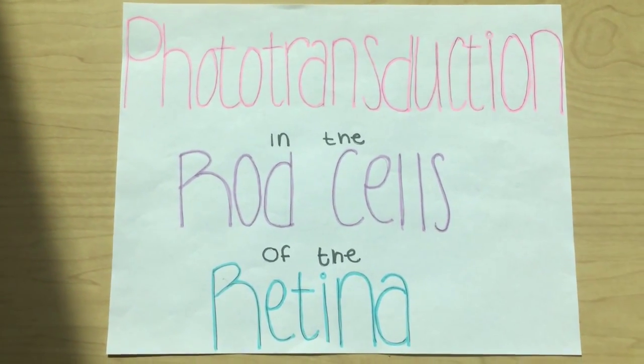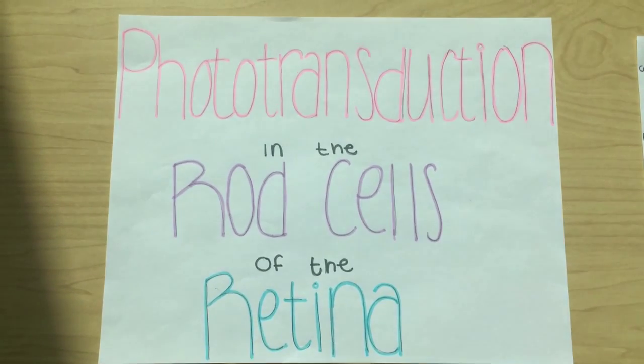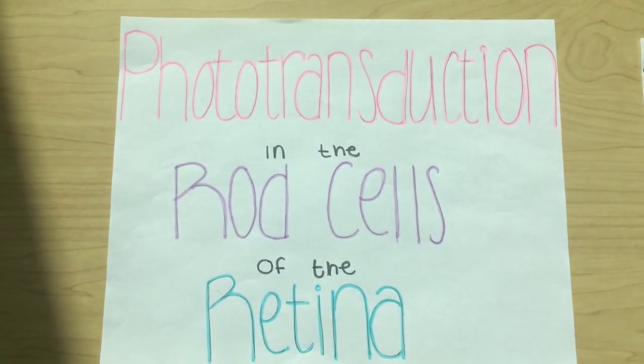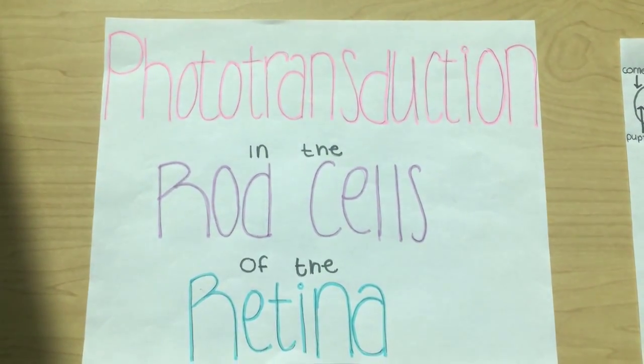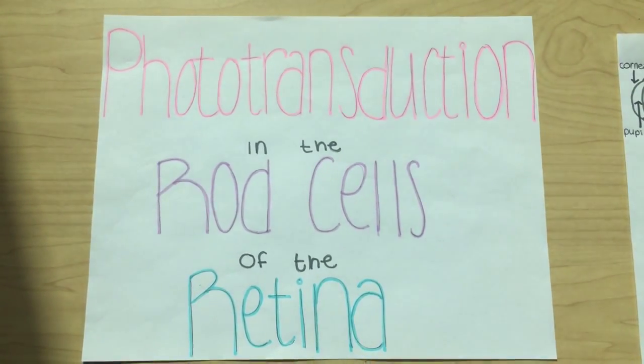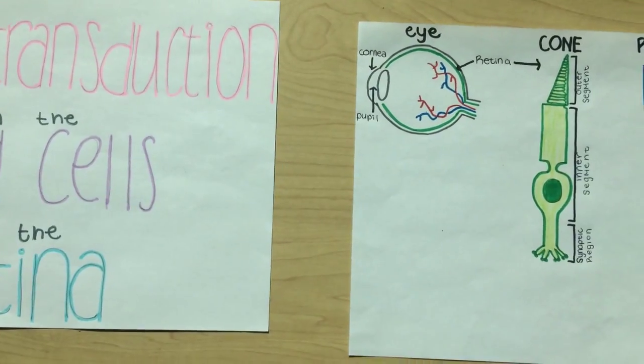Phototransduction in the rod cells of the retina. Phototransduction is a process through which photons are converted into electrical signals. This begins in the eye.